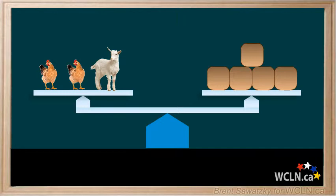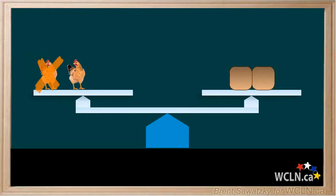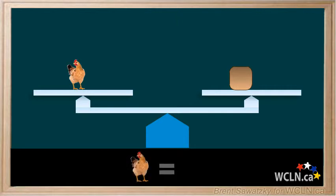Let's use our methods of simplifying the situation. There aren't any blocks to remove from the left, so we'll skip that idea. But we know that a goat weighs the same as three blocks. So if we remove a goat from the left side, we can remove three blocks from the right side and keep it balanced. Now we're left with two chickens on the left. We divide both sides in half: two chickens divided by two is one chicken, and two blocks divided by two is one block. The scale shows us that a chicken is equal to one block.